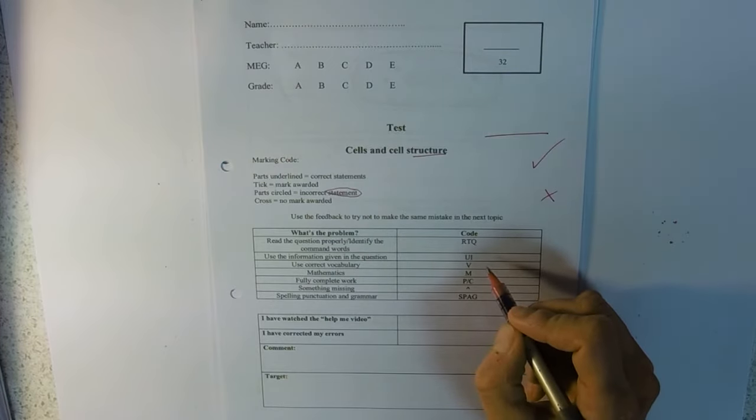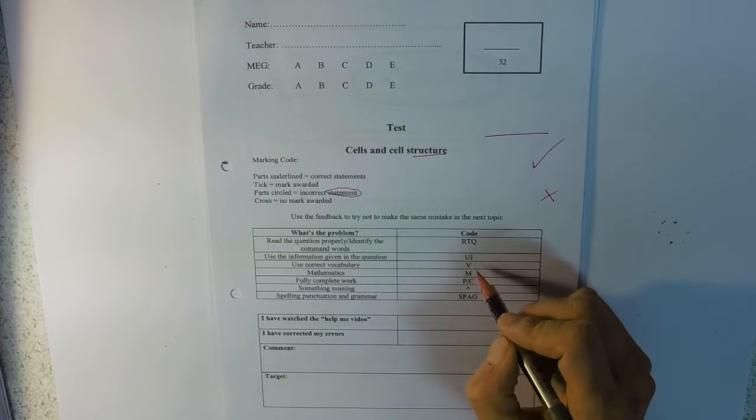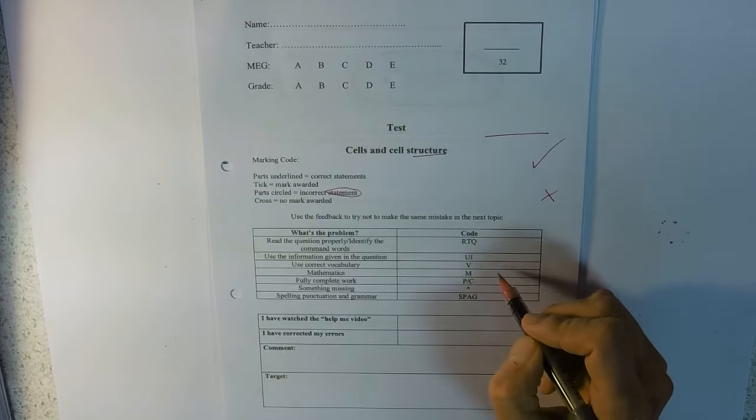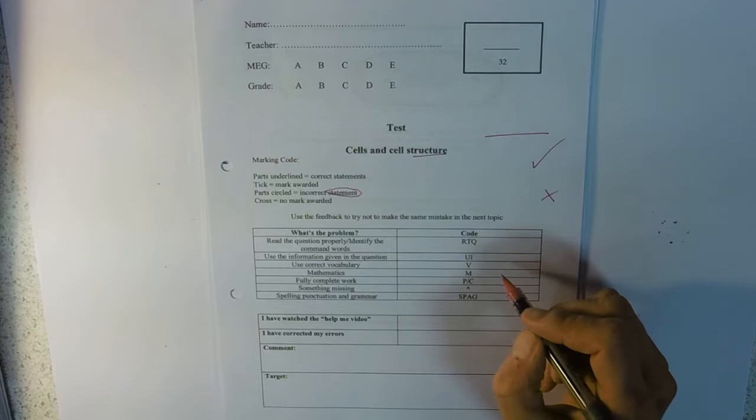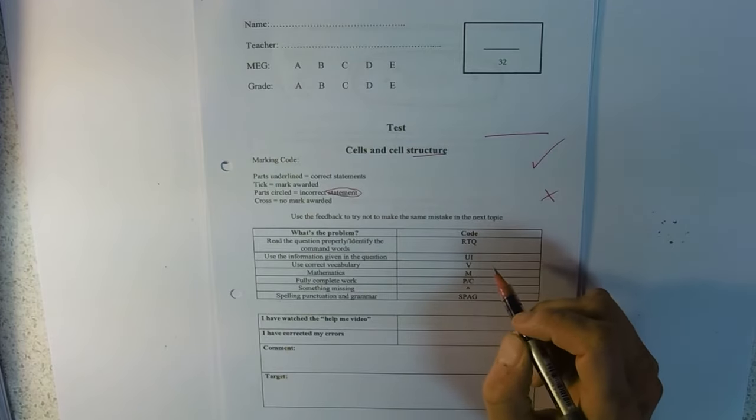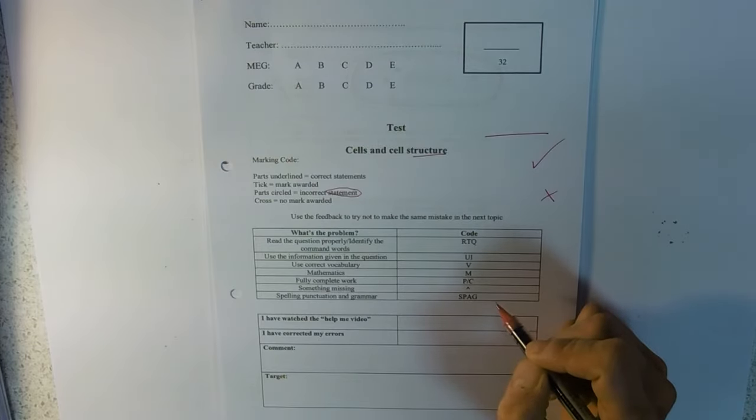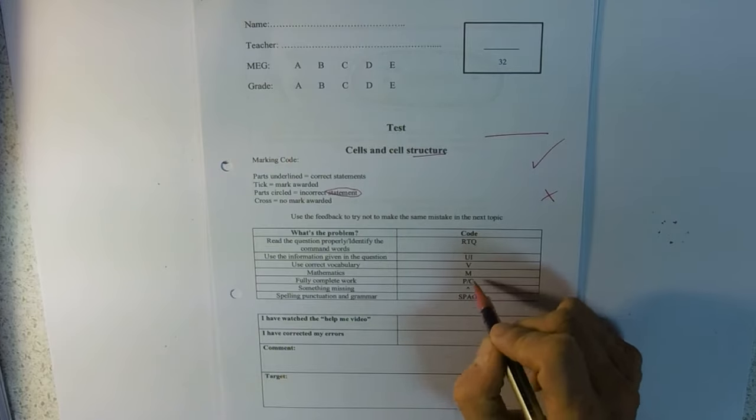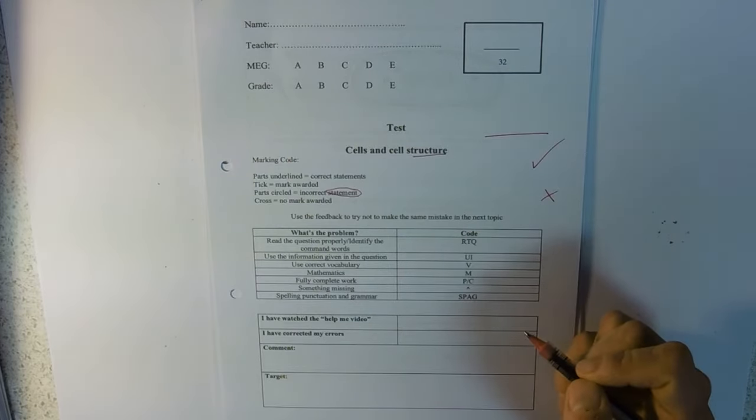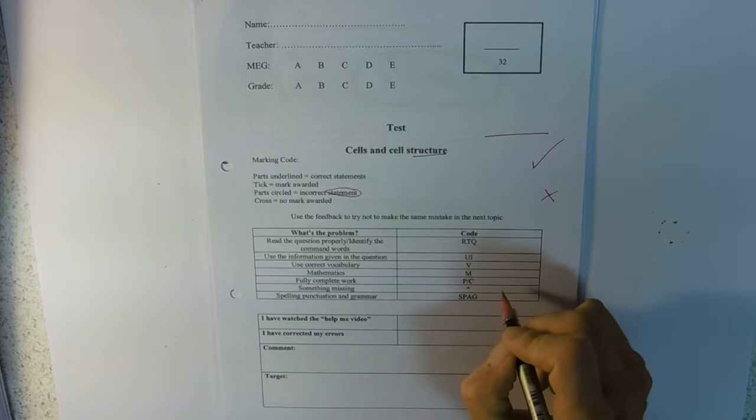Vocab: terminology. You've used a general word rather than a scientific word. You've used something like it or thingy where it wanted something more scientific. And for maths, fully complete work. So PC, partially complete, means you've abandoned ship halfway through a question, you've missed something out.